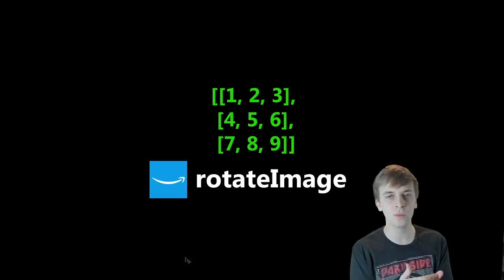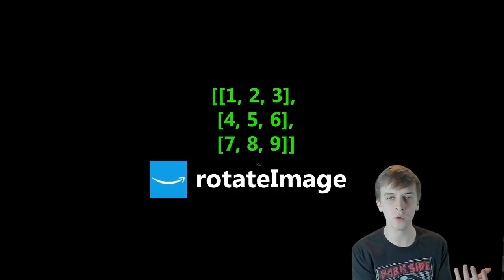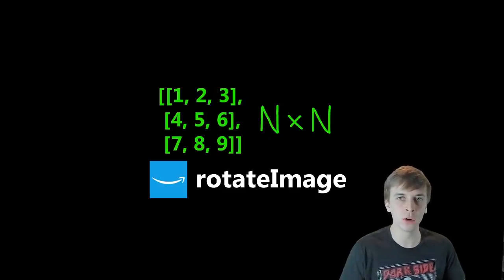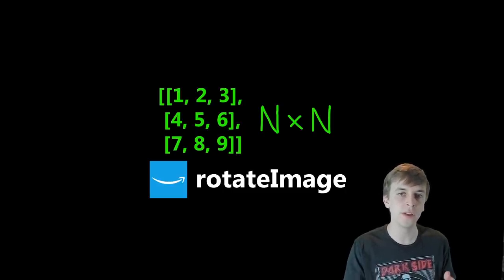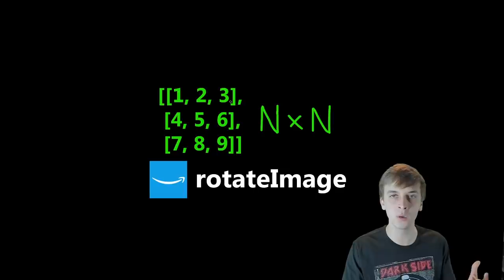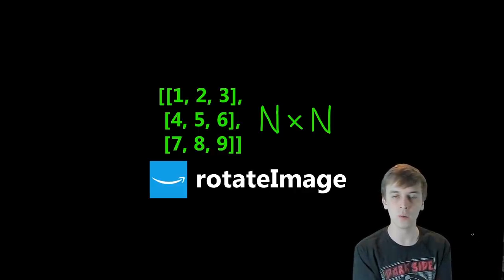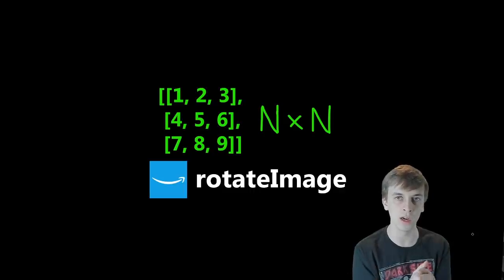A two-dimensional array is basically an array where there are subarrays as each element of the outer array. Arrays have elements — this array is an element of the outer array. You can see there are rows and columns. The two-dimensional array we're going to be working with is going to be of size n by n, meaning the number of rows is going to equal the number of columns. So it's going to be almost like a perfect square — n rows times n columns.